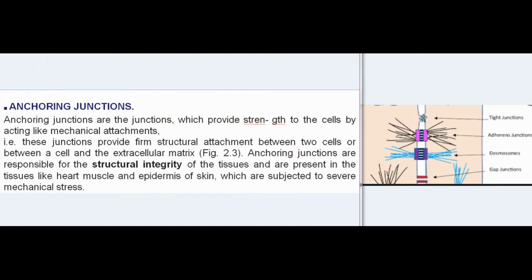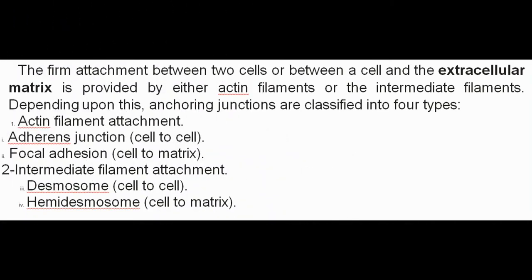Anchoring junctions: Anchoring junctions are junctions which provide strength to the cells by acting like mechanical attachments. These junctions provide firm structural attachment between two cells or between a cell and the extracellular matrix. Anchoring junctions are responsible for the structural integrity of tissues and are present in tissues like heart muscle and epidermis of skin, which are subjected to severe mechanical stress. The firm attachment is provided by either actin filaments or intermediate filaments.